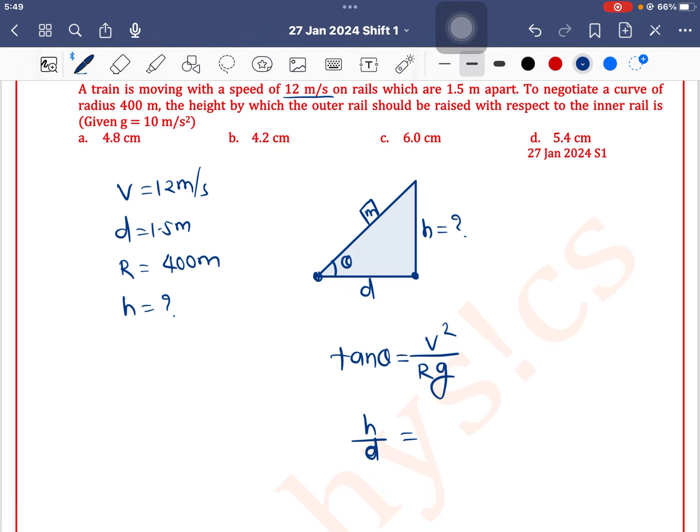h by d equals v squared by Rg, so the value of h is v squared. v is 12, so 12 squared times d.